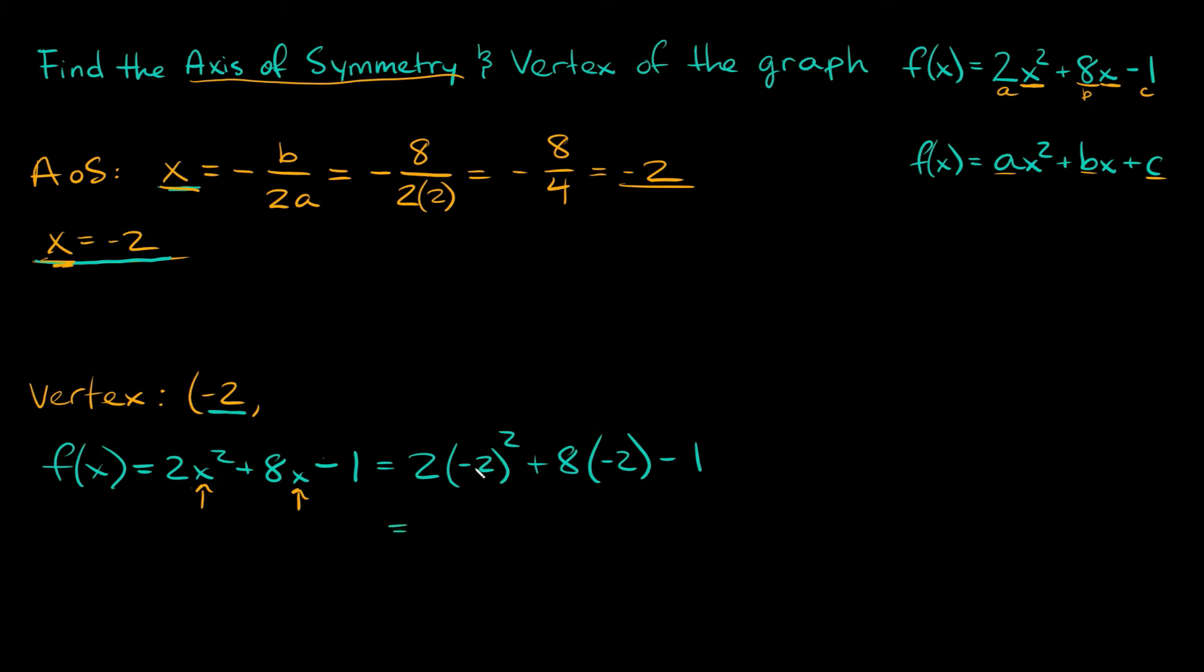Let's simplify this. First of all, negative 2 squared—PEMDAS, do your exponents first. Negative 2 squared is positive 4, and positive 4 times 2 is 8. Then we add that to 8 times negative 2, which is negative 16, and then negative 1. Here we have 8 minus 16, which is negative 8, and negative 8 minus 1 equals negative 9. That means our y-value when x is negative 2 is negative 9. Your vertex is at negative 2 comma negative 9.